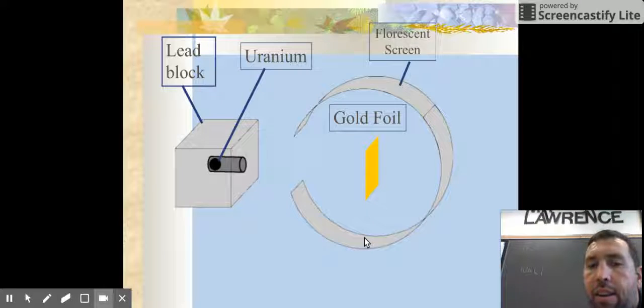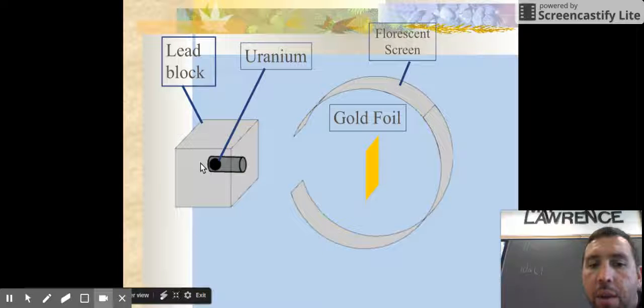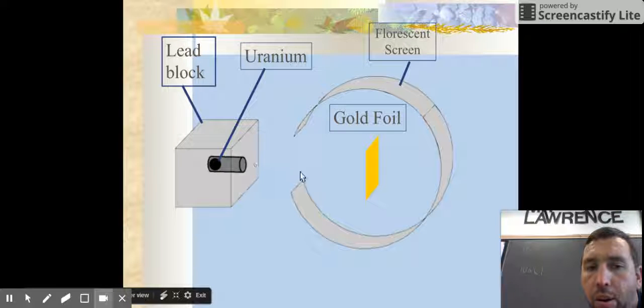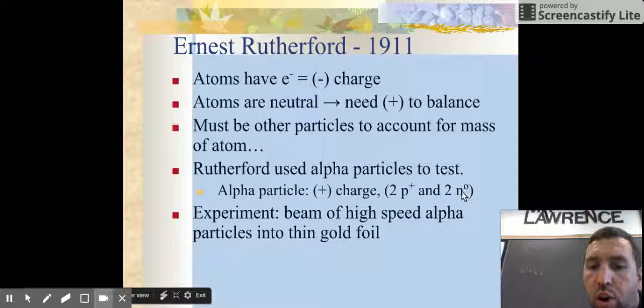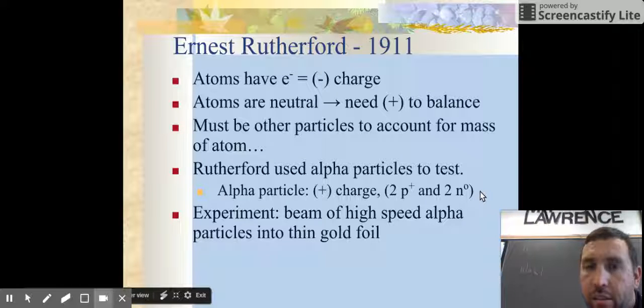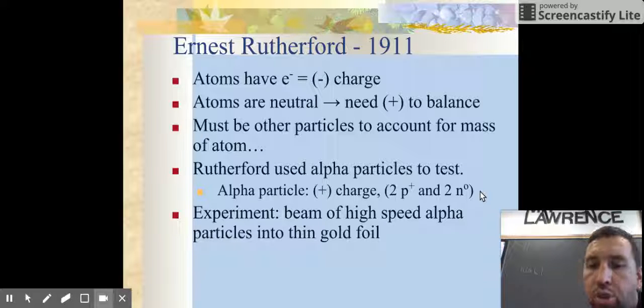So when you look here at the next slide, this is how he set up his experiment. He had something that shot out alpha particles. And this alpha particle, if you remember, is just two protons and two neutrons with no electrons. So in other words, this is helium. We have a helium here with no electrons, so it's a positively charged helium that he is shooting out.